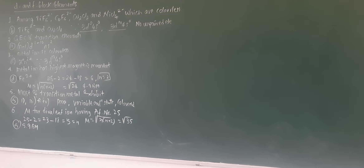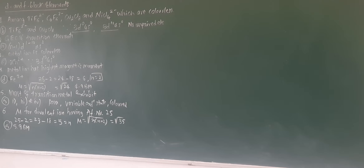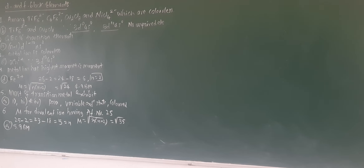To solve this type of problem: calculate the atomic number of the divalent ion (25 - 2 = 23), apply the noble gas configuration to find n = 5, then use μ = √(n(n+2)) = √35 ≈ 5.9 BM.